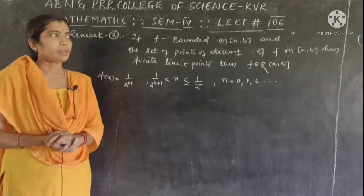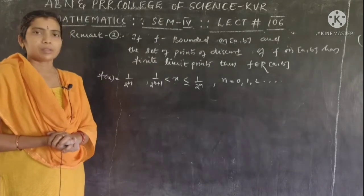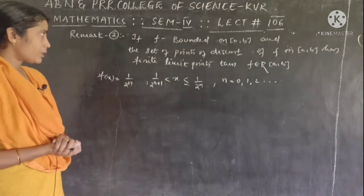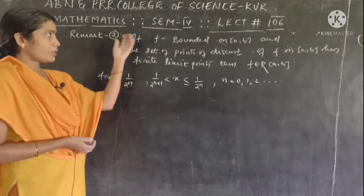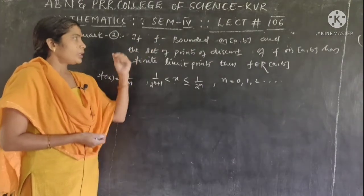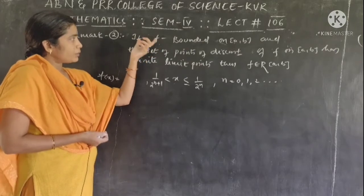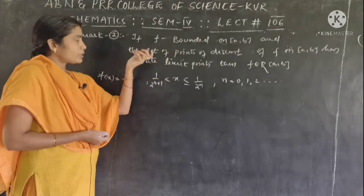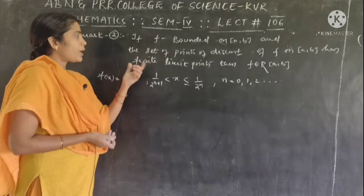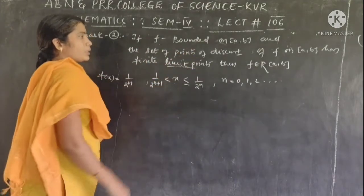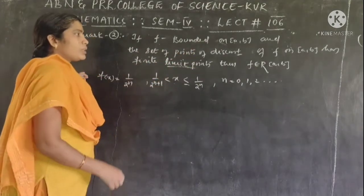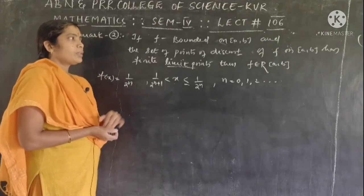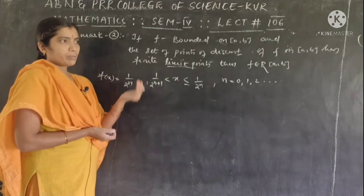Good morning students, welcome to ABN and PRR college online classes. Today we will discuss one more remark: whenever function f is bounded on closed interval [a,b] and f has discontinuous points on [a,b] such that the set of discontinuous points has finite limit points in that interval, then we can say that f is Riemann integrable on [a,b].